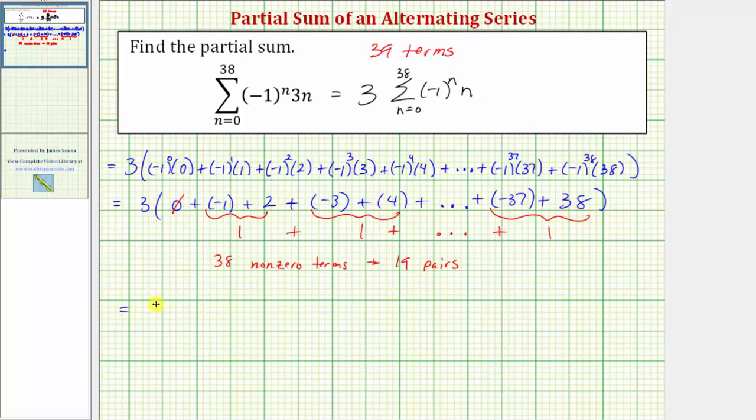Which means this partial sum is really three times 19 ones, or three times 19 times one, which of course is just three times 19, which equals 57. So the partial sum is equal to 57. I hope you found this helpful.